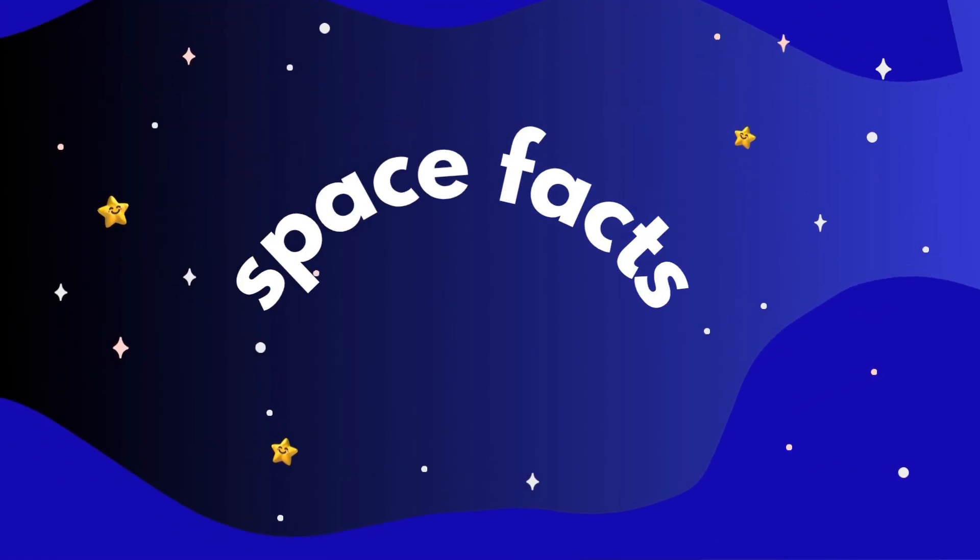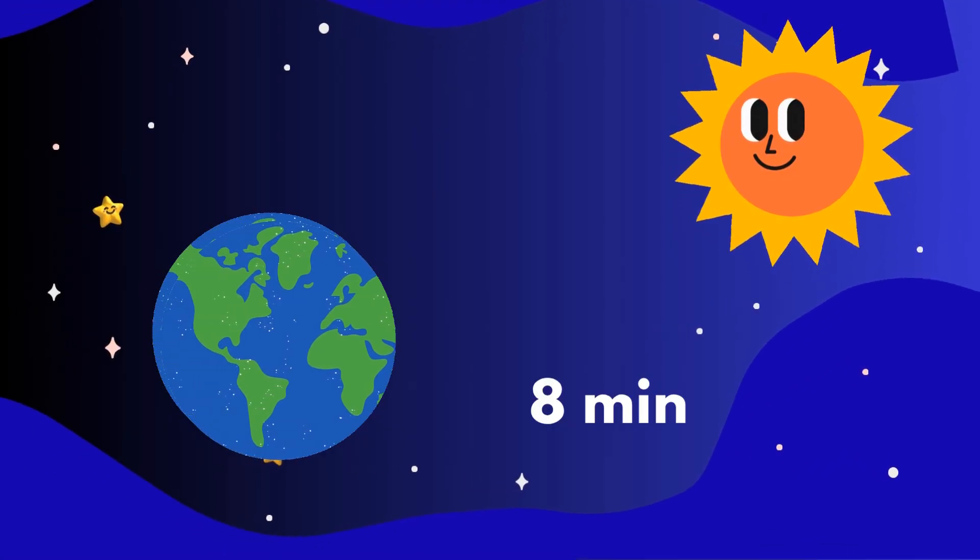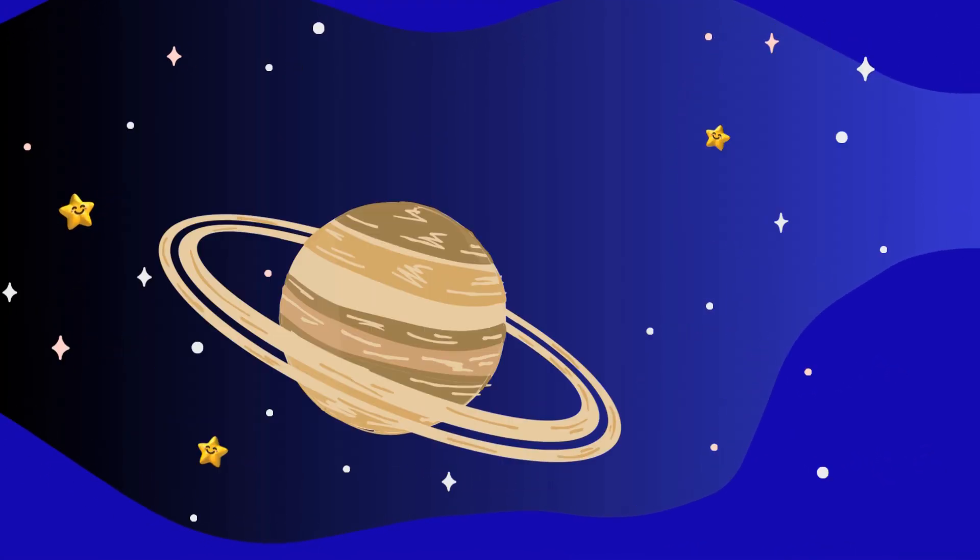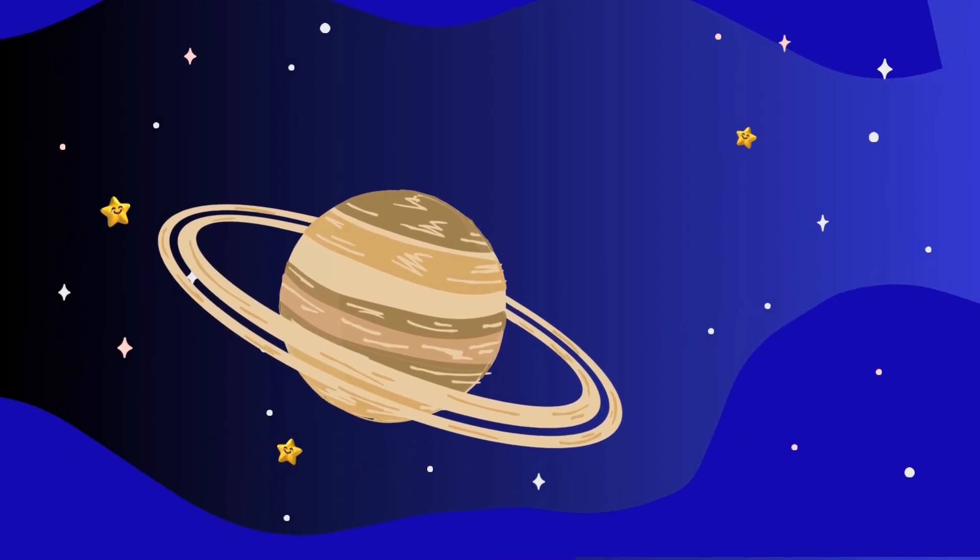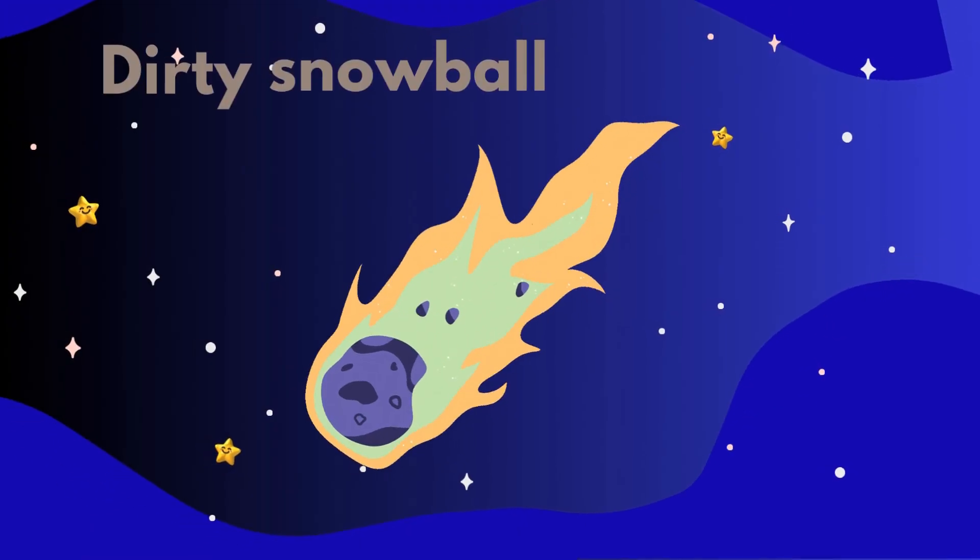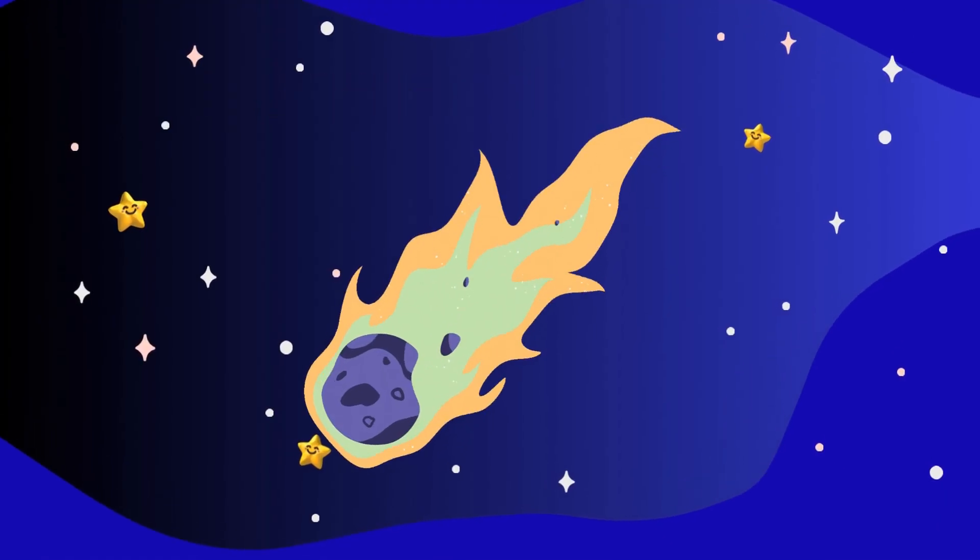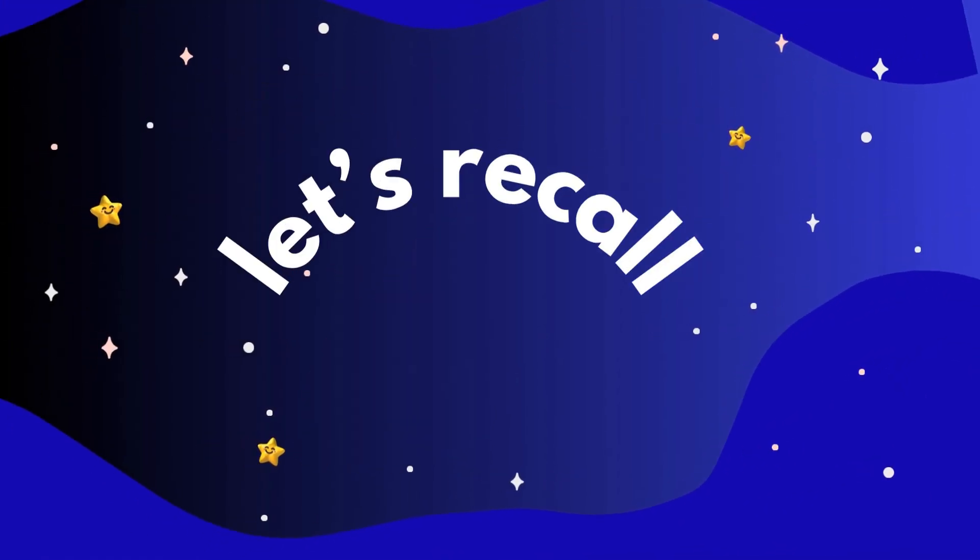Here are some space facts. Sunlight takes eight minutes to reach Earth. Saturn's rings are made of ice and dust. Comets are nicknamed dirty snowballs.